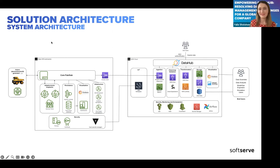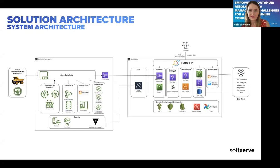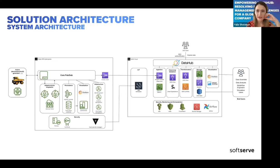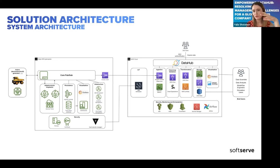Different end users can query DataHub. For example, I need to know where I have a customers table — I find it is saved on S3 and in Athena, so I can request access to it and then use it in my programs or visualization tools. That was the main idea of this solution architecture.